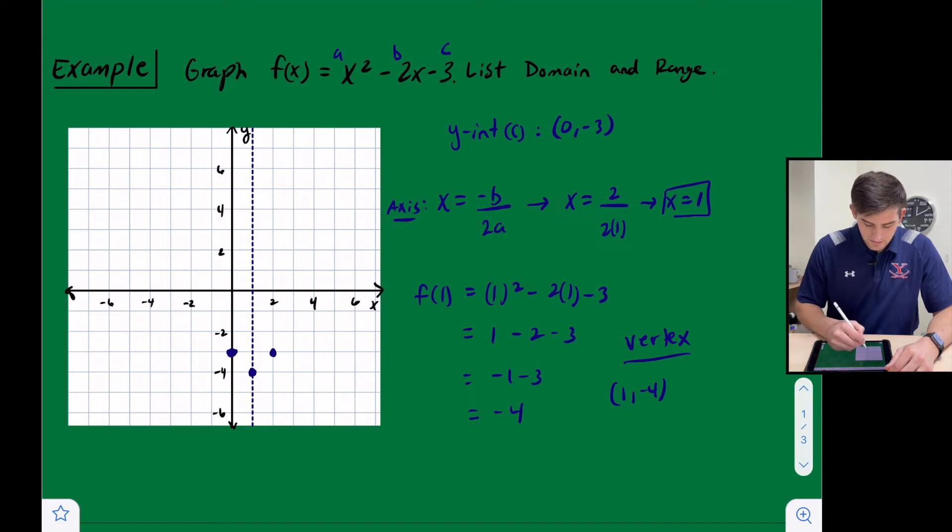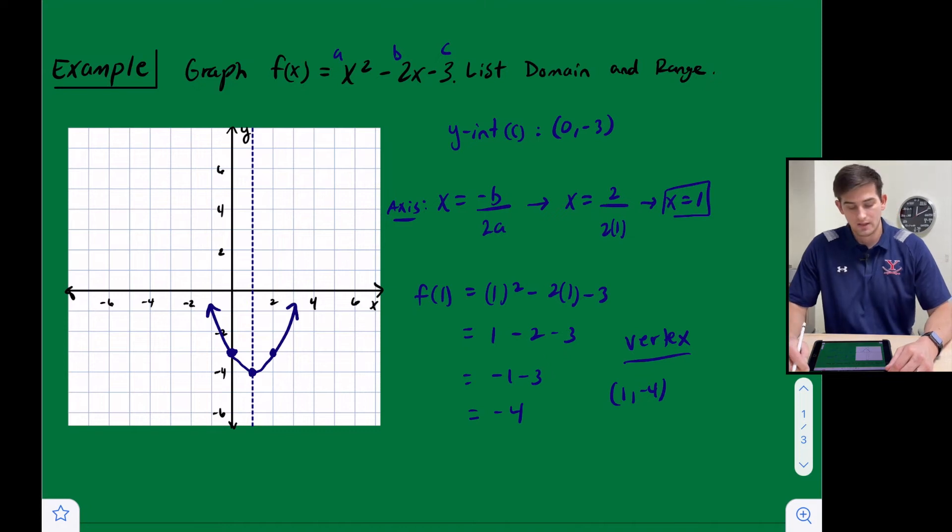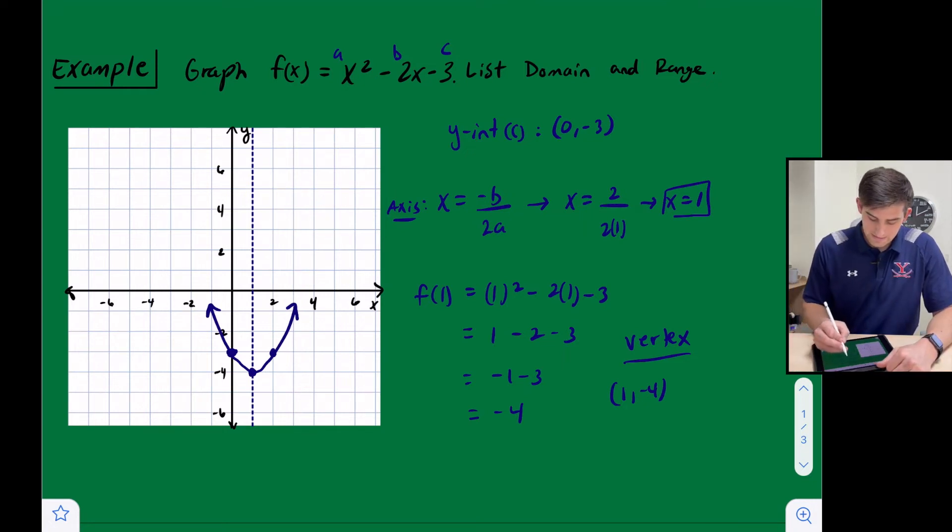And so now we can take and draw our parabola through our three points. And if we wanted to find a couple other points, we could pick an x value, plug it into our equation and solve. So right now we're going to leave it as is.